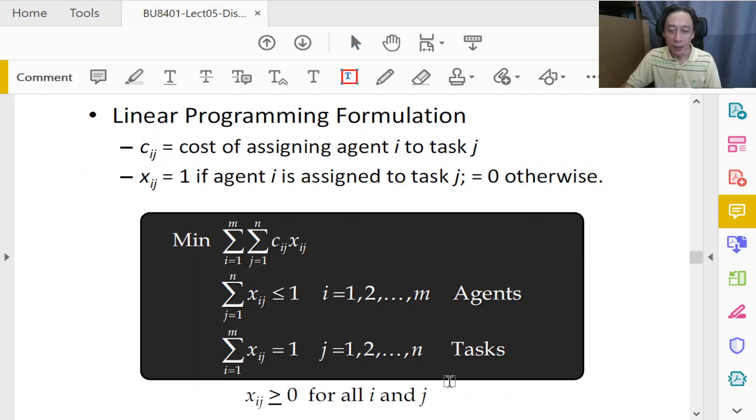We say that x_ij has to be binary if you are having yes or no decisions. But if you allow for a person to multitask, to work on both task one and three simultaneously—no more than three tasks at the same time, for example—then you will drop the binary to integer. As an assignment problem, it's a yes-no, should I assign or should I not assign problem.